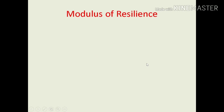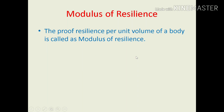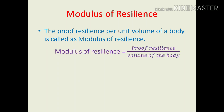The next definition is modulus of resilience. This is simply a formula — it is a constant. It is the proof of resilience, or it is the maximum strain energy per unit volume of the body. Modulus of resilience is the ratio of proof resilience, or the maximum strain energy, divided by the volume of the body.